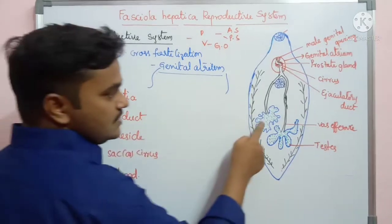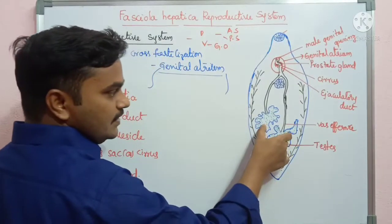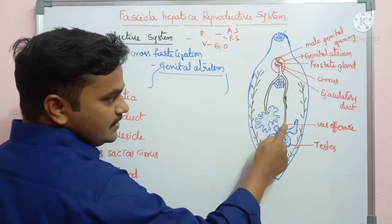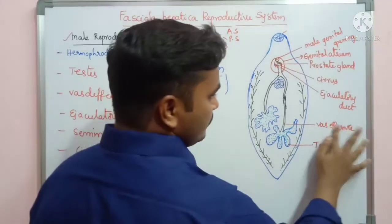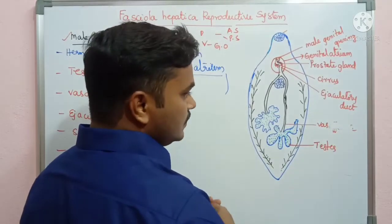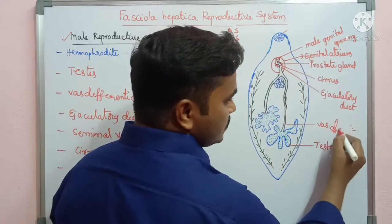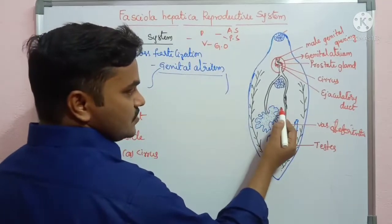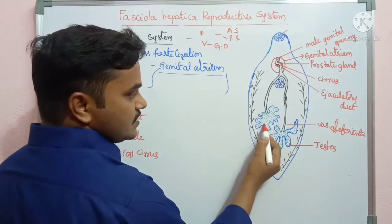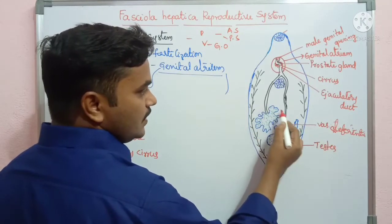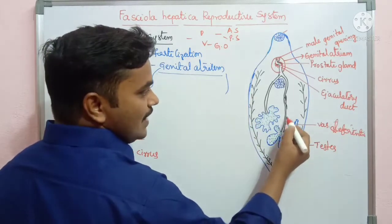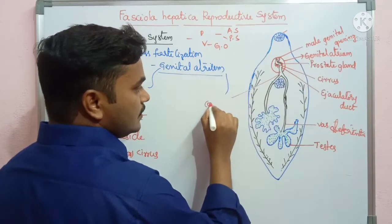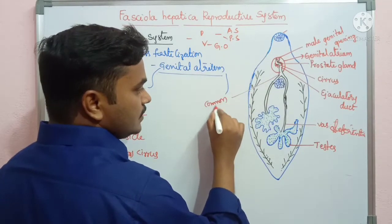A pair of testes are located in the middle region of the body. From these testes, ducts open into the vas deferens. Here you can see a tubule-like structure — that is the vas deferens. A pair of vas deferens are then fused to form a common duct.